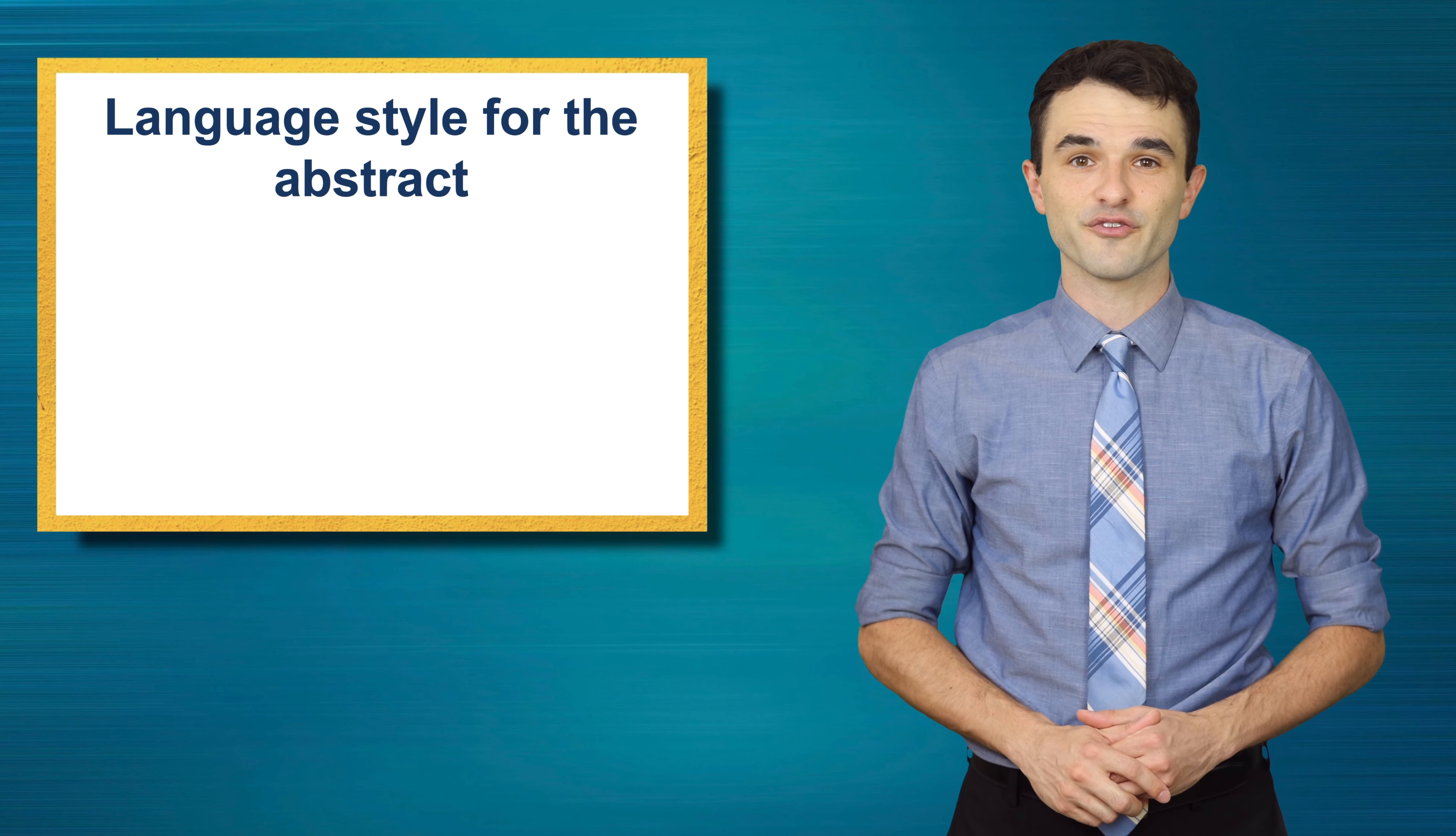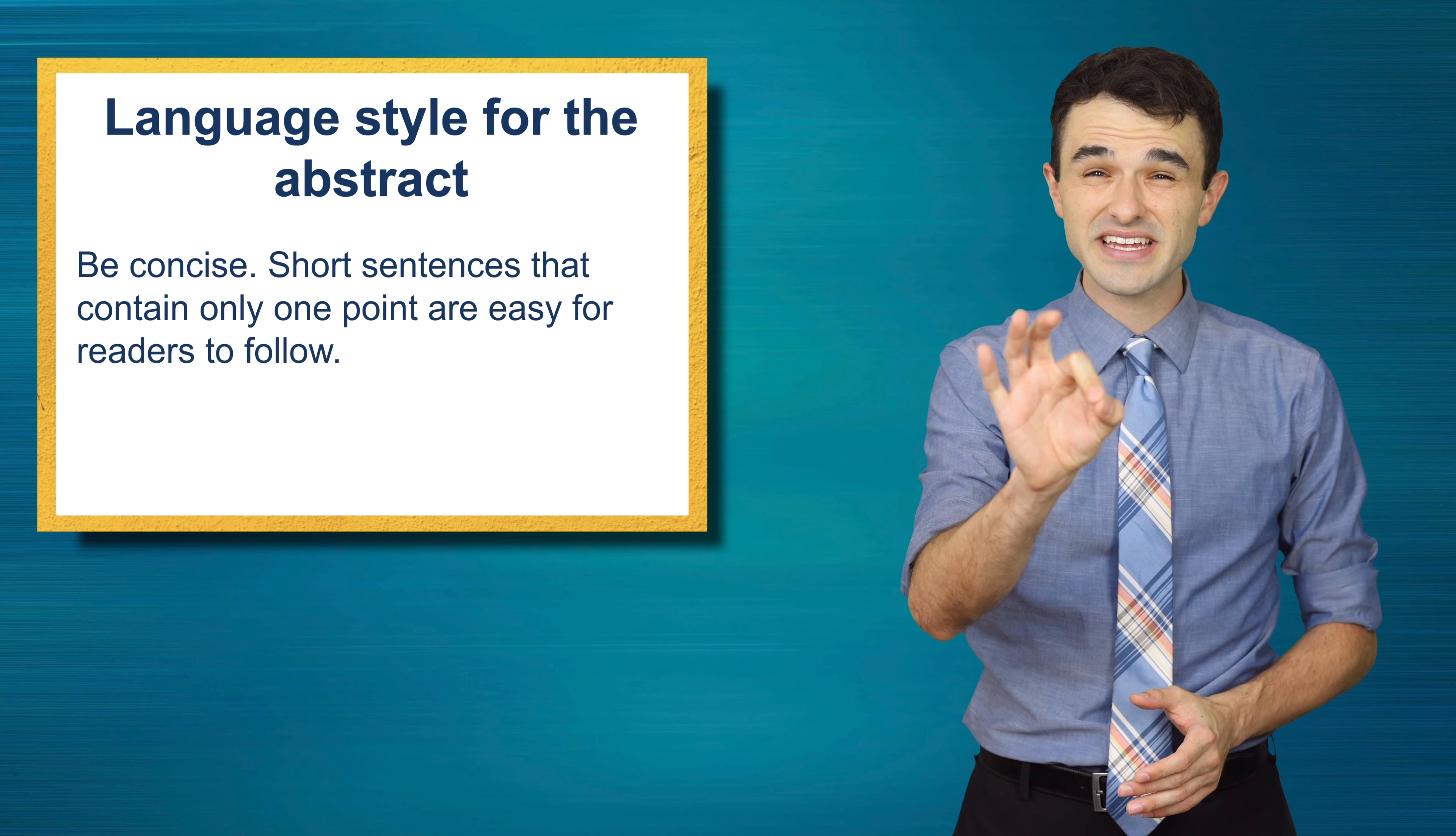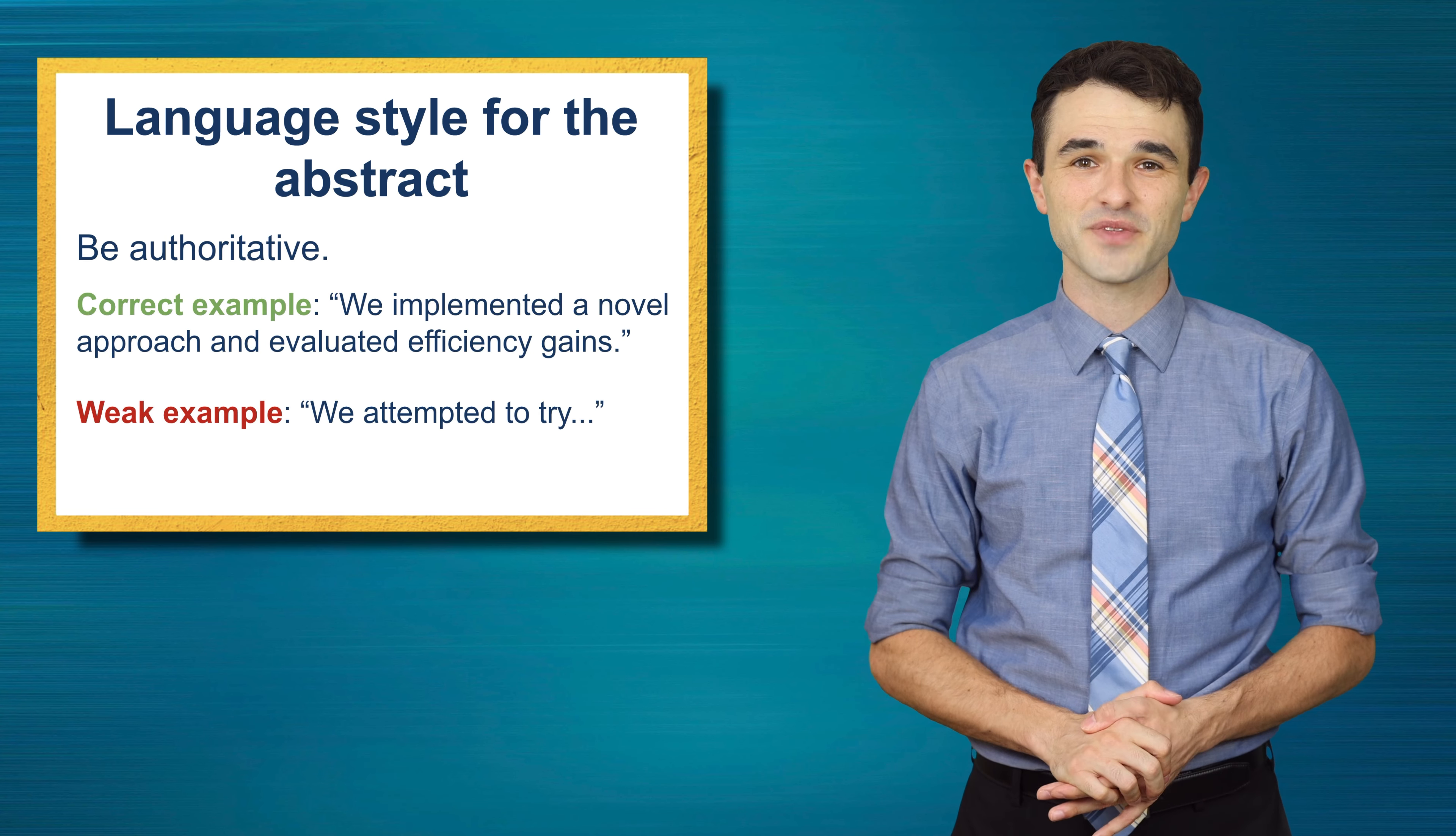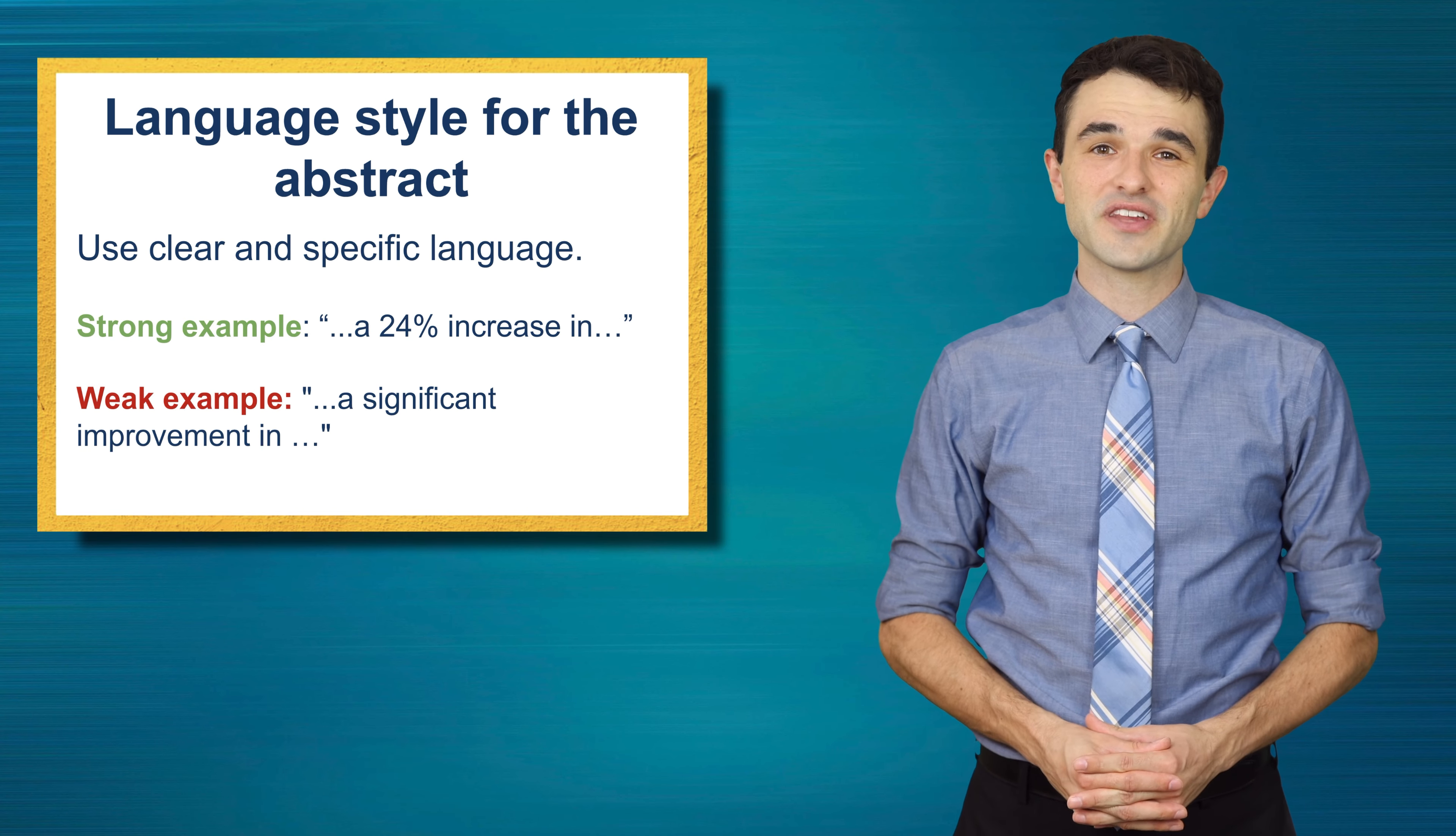Language style for the abstract. Search and use exact phrases so they will turn up at the top of the search listing. Point-by-point language style is acceptable. Be concise. Short sentences that contain only one point are easy for the readers to follow. Be authoritative. Correct example: We implemented a novel approach and evaluated efficiency gains. Weak example: We attempted to try.